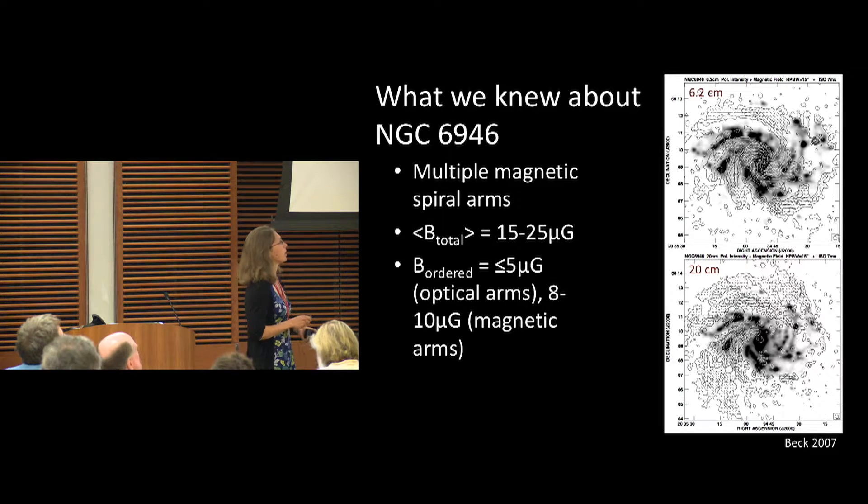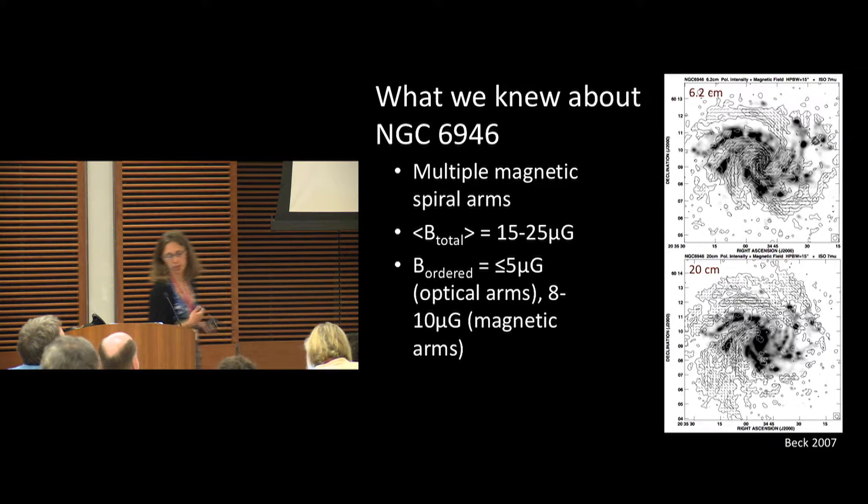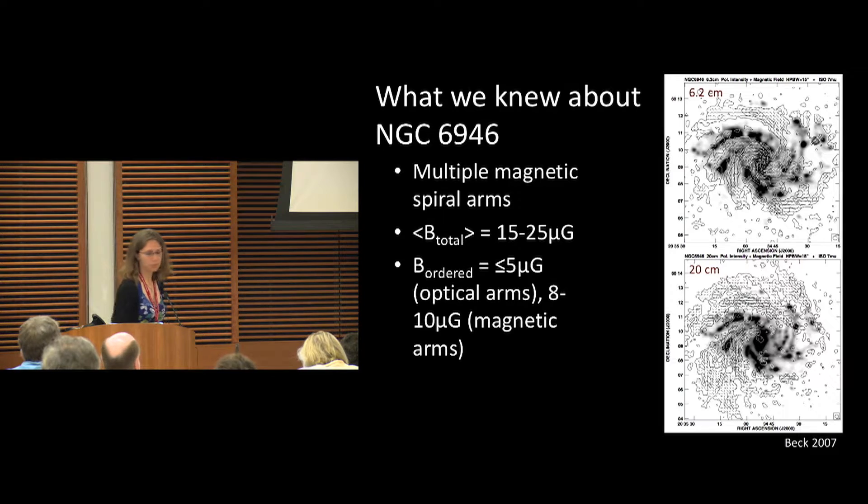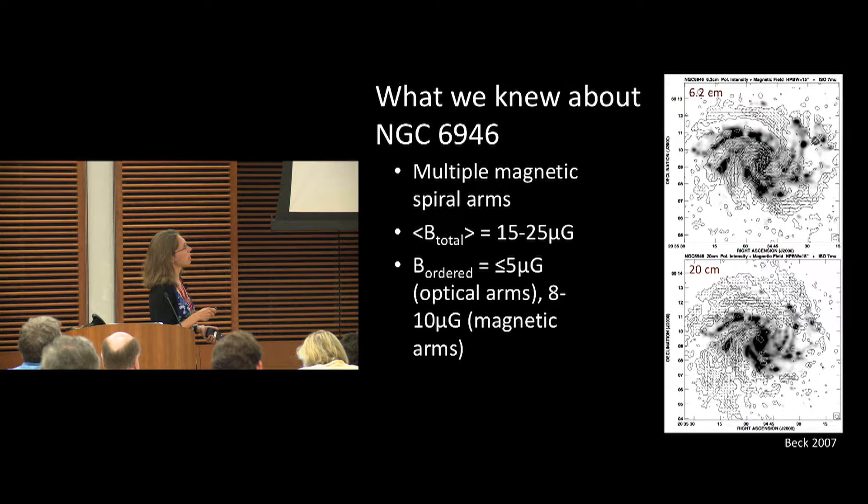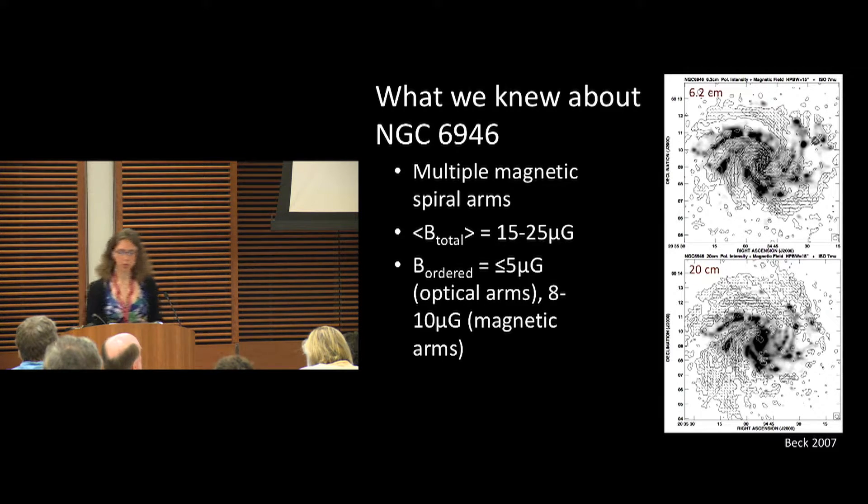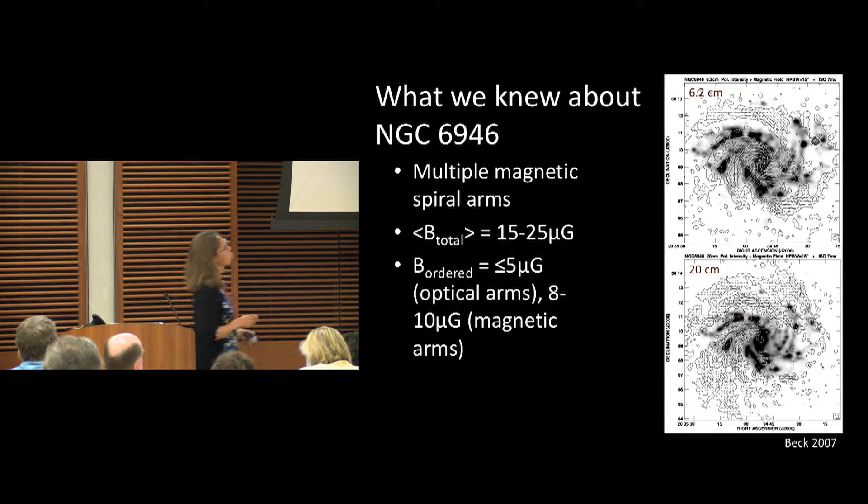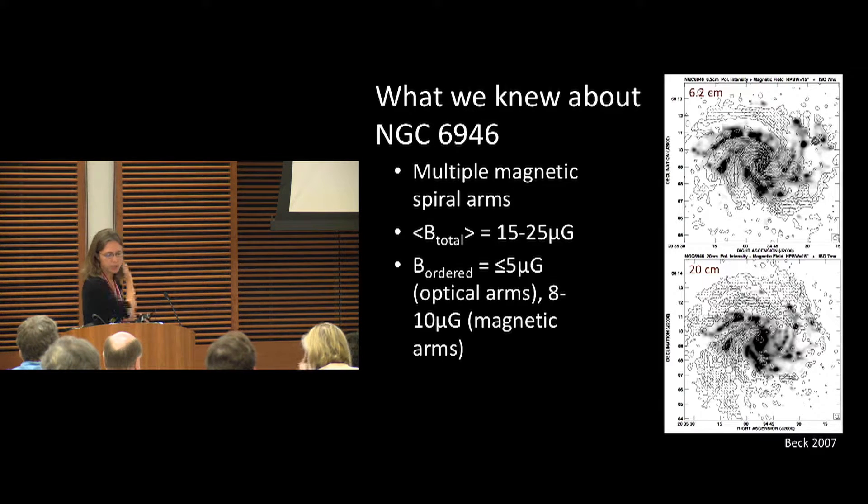We can see multiple spiral arms in both 6 centimeter and 20 centimeter. You've got spiral arm structure. Again, it's in between your optical star forming regions, spiral arms.